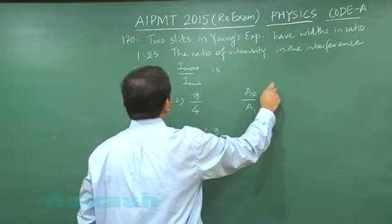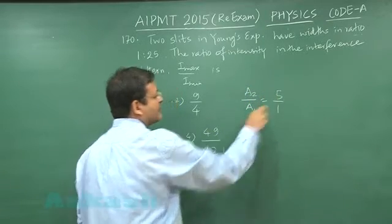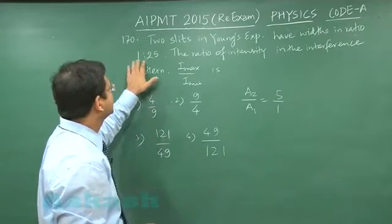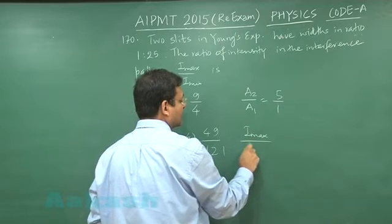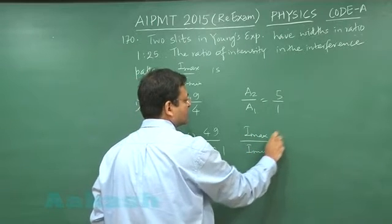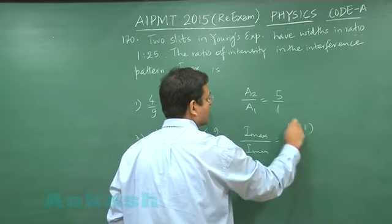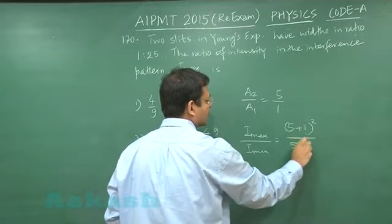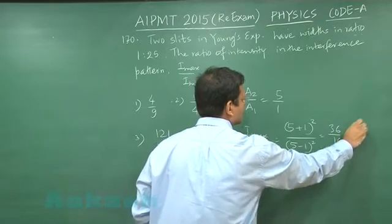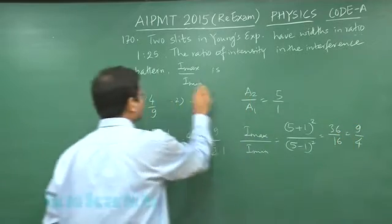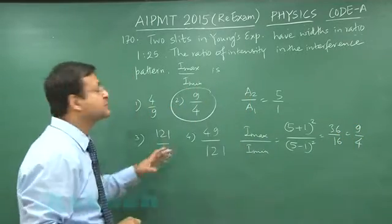A2 by A1, that has been given as 5 is to 1, 5 upon 1 because it is 1 is to 25, and they want I max upon I minimum. So this is 5 plus 1 whole square upon 5 minus 1 whole square. This is 36 by 16, in total you can say 9 by 4.